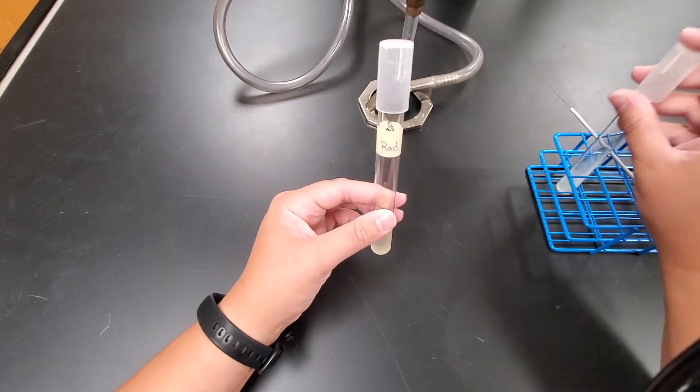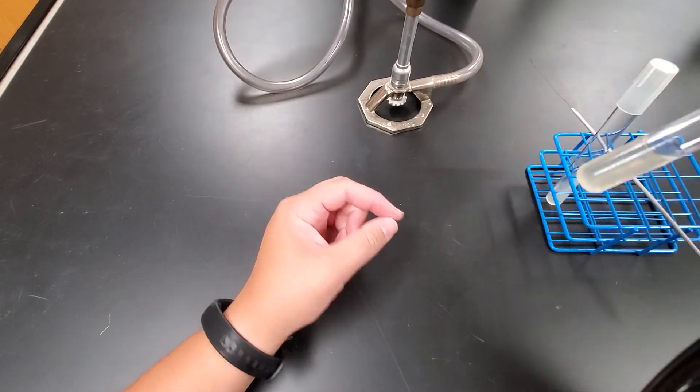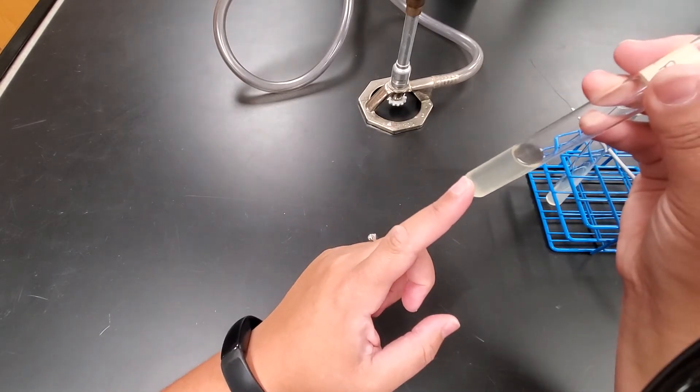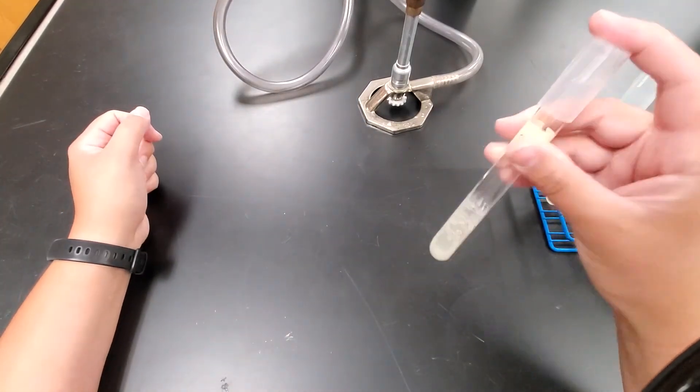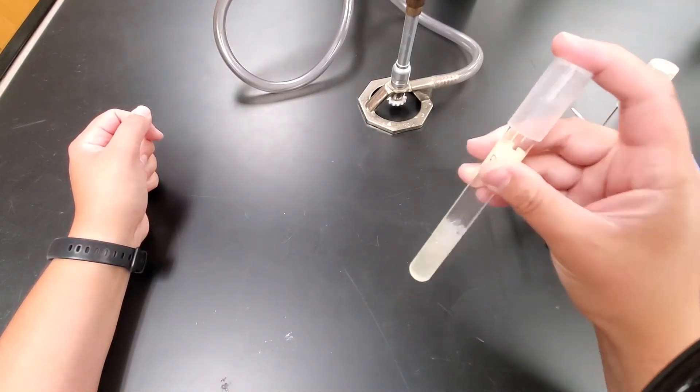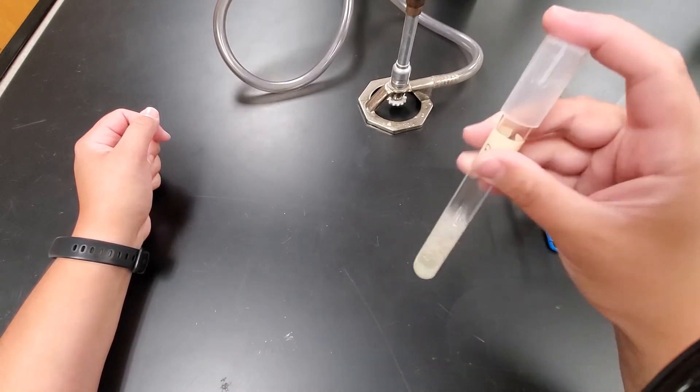So what we want to do first is whenever we do a transfer, especially with broth, all of my growth is at the bottom of this tube. The first thing I want to do is shake that up so I can suspend the bacteria that's now in that broth.